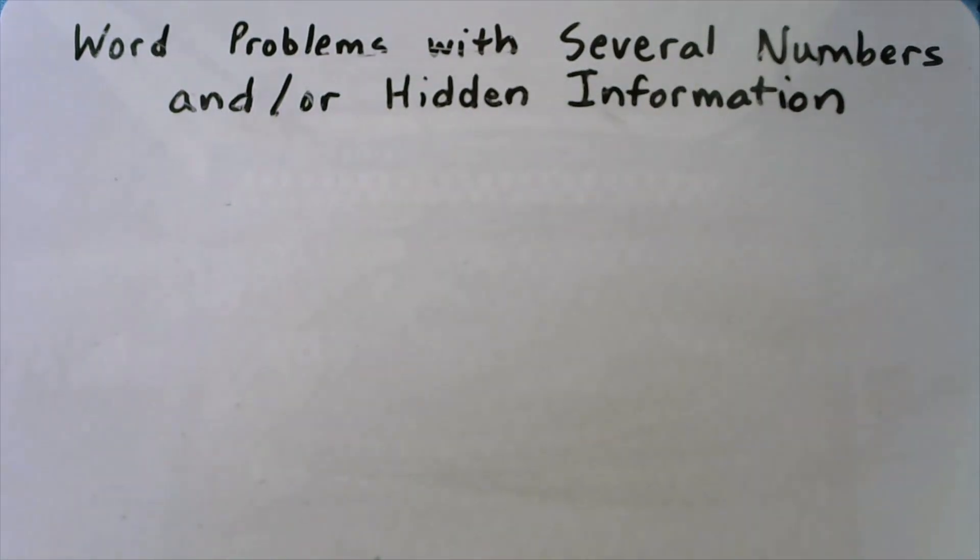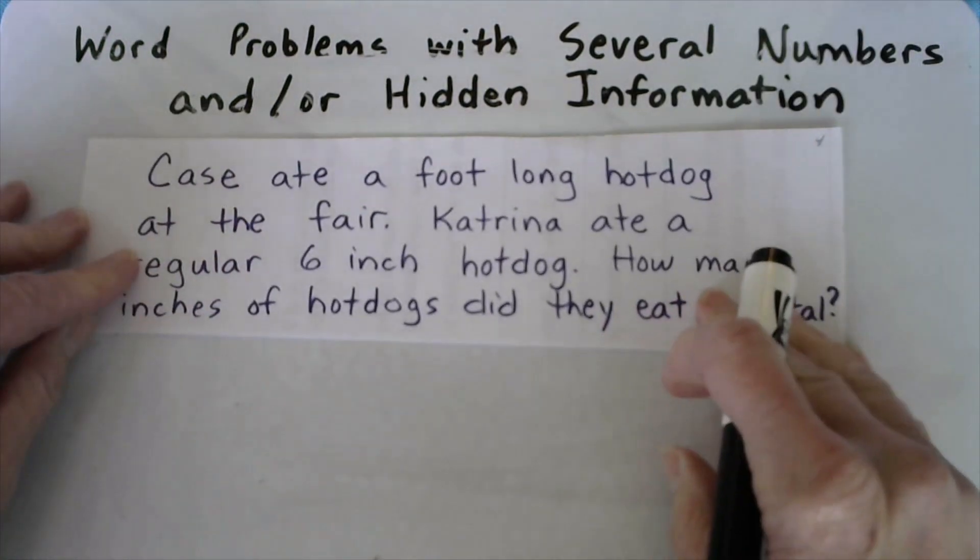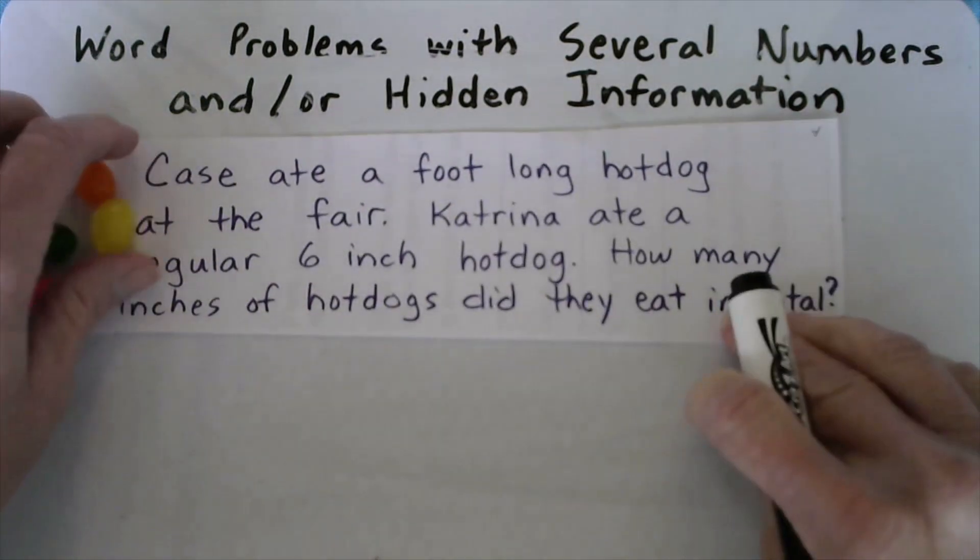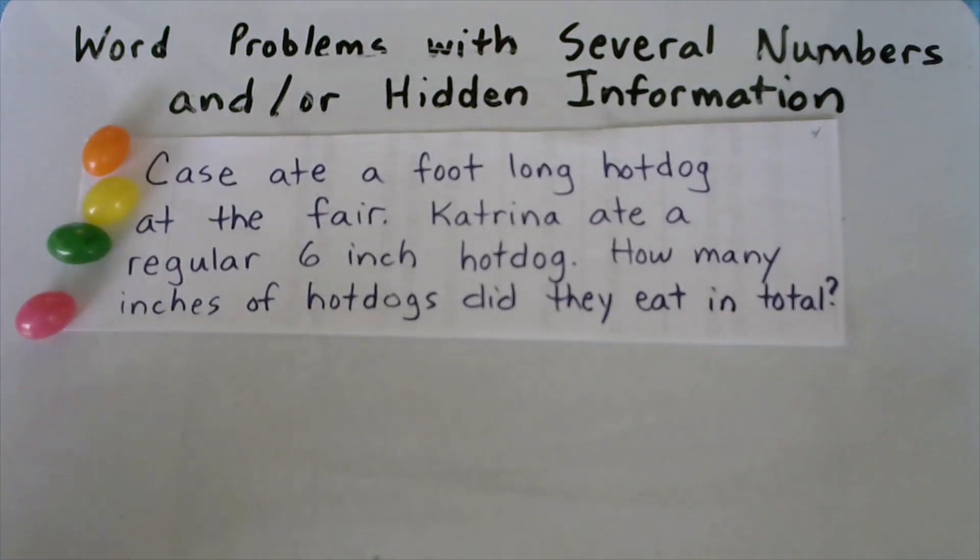I'm racing against the storm to finish this lesson. Let's read about Case and Katrina. Read with me. And I'm going to weight this down with my handy dandy jelly beans. Case ate a foot long hot dog at the fair. Katrina ate a regular six inch hot dog. How many inches of hot dogs did they eat in total?